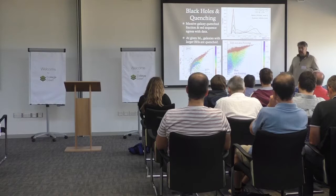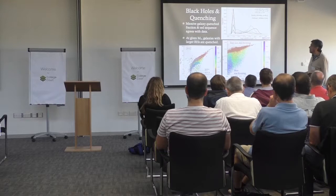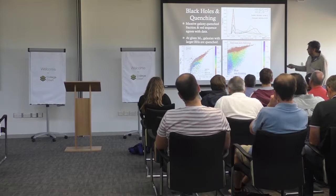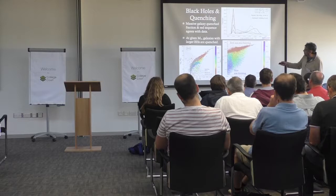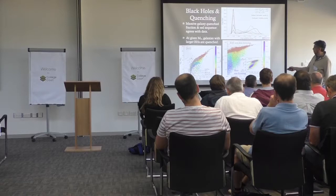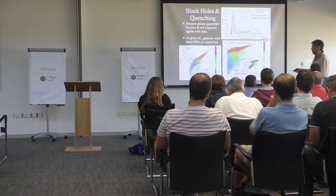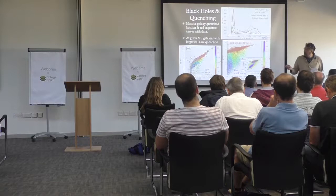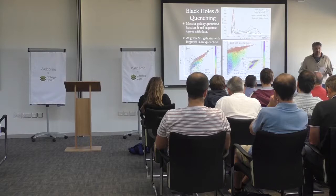We want to produce both star-forming galaxies and quenched galaxies, and it turns out we can do that with our black hole feedback. A key way to look at this is what's often called the color-magnitude diagram. The non-star-forming galaxies are reddish at the top, and the bluer star-forming galaxies are at the bottom. There's a red sequence and a blue cloud, and we produce both basically in agreement with observations. This was extremely hard to achieve — I think now Eagle can do it, Illustris TNG can do it, but I'm not sure anyone else can.